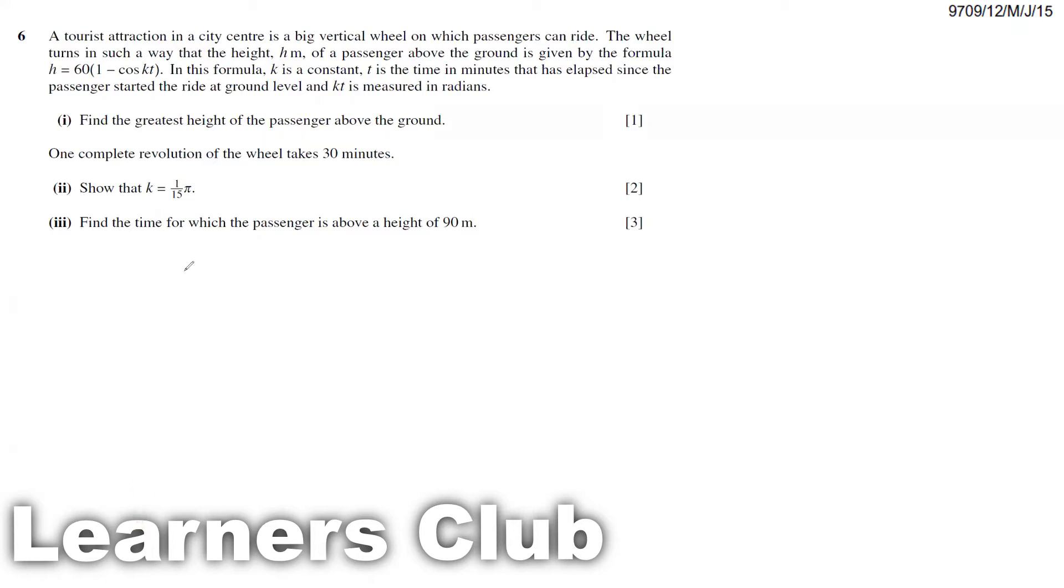So this question is about a vertical wheel where passengers can ride. The height of the passengers above the ground is given with this expression. k is a constant, t is given in minutes. This is the angle that is given in radians.